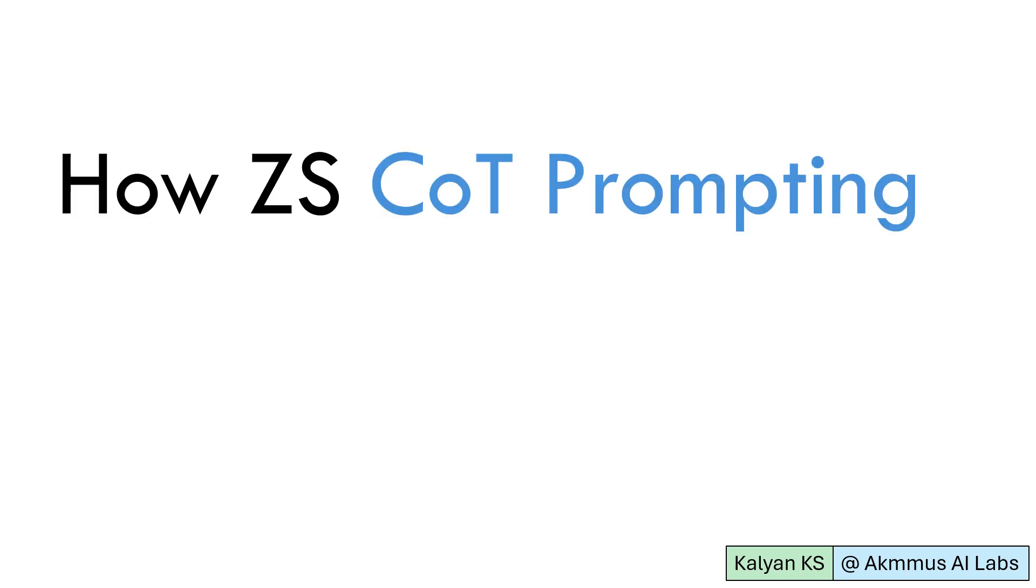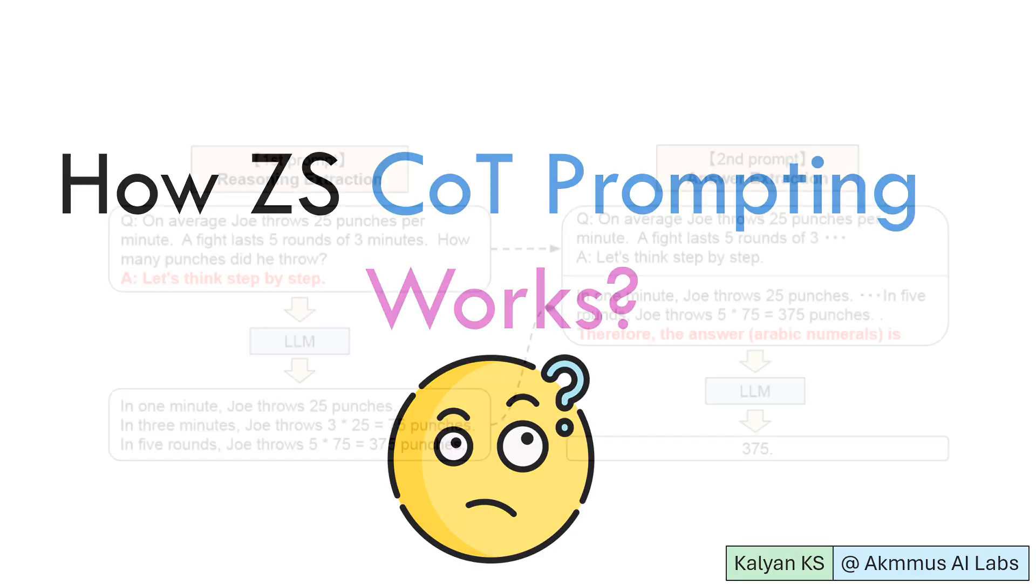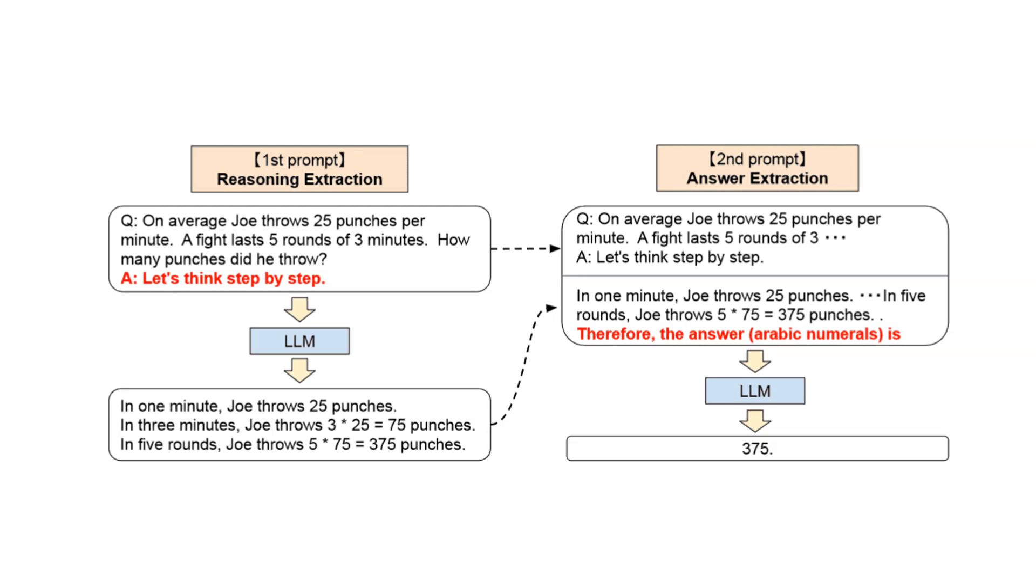Now, let us see how zero-shot COT prompting works. Zero-shot COT involves two steps: reasoning extraction and answer extraction.